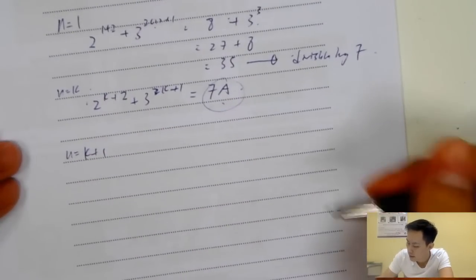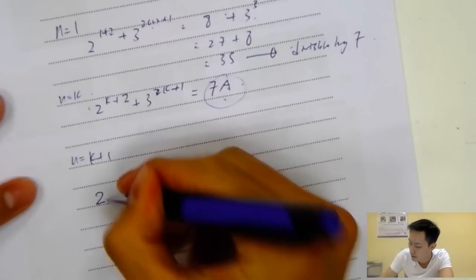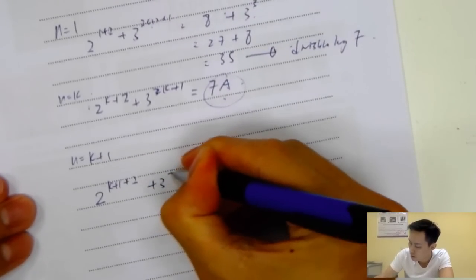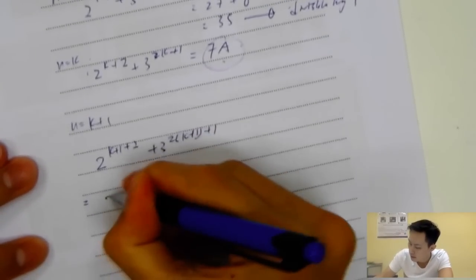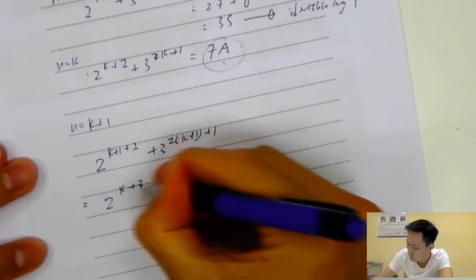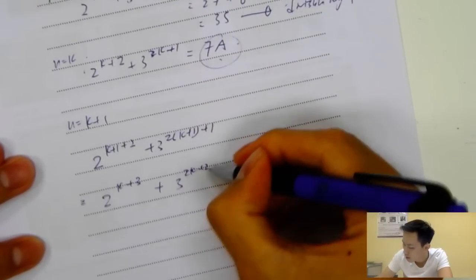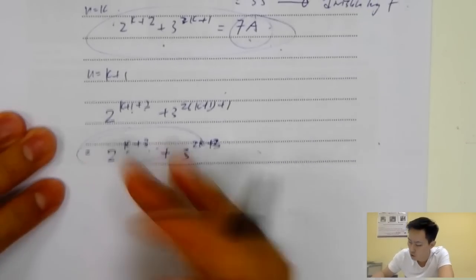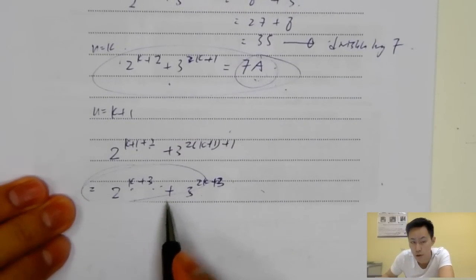So we sub in K plus one: we get 2^(2(K+1)+1) plus 3^((K+1)+2), which simplifies to 2^(2K+3) plus 3^(K+3). Then we want to substitute this back into the equation and prove it is divisible by seven.